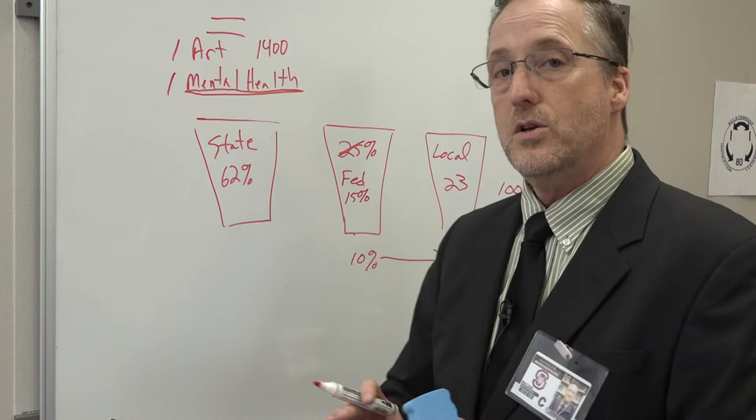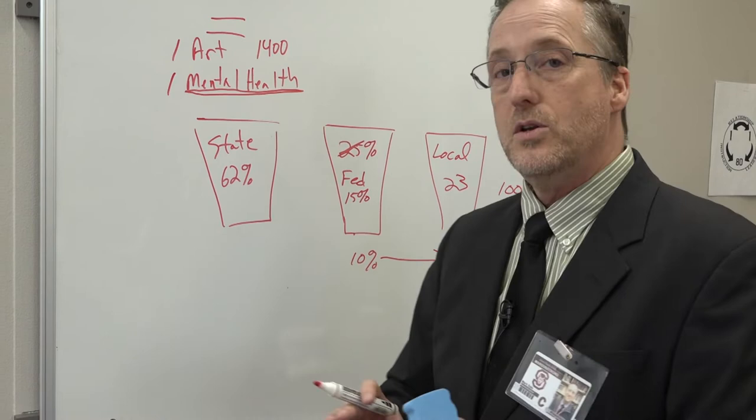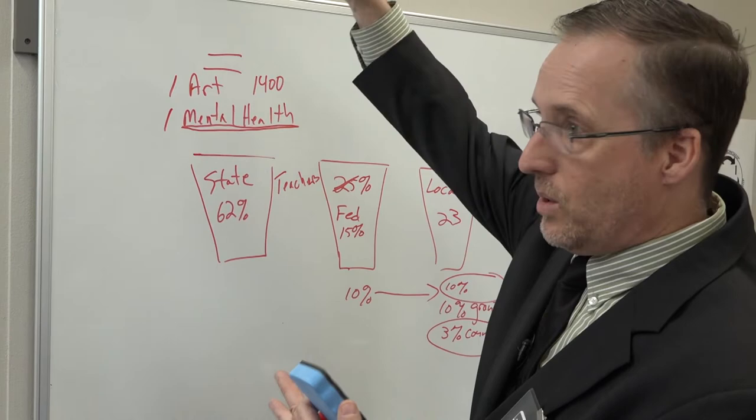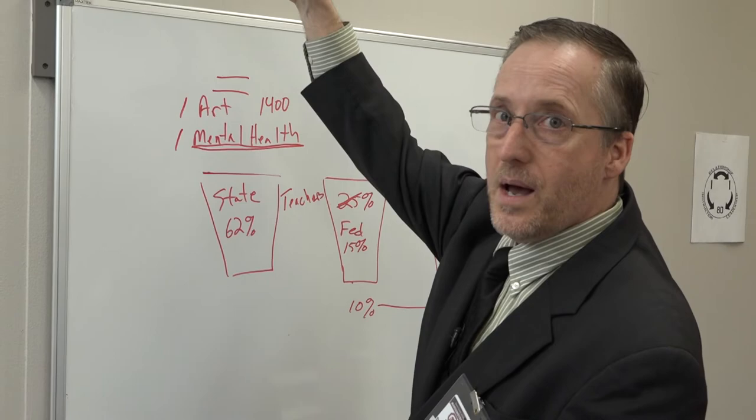Now, what that means is there has been no adjustment to most of our teachers, not all, but most of our teachers' salary because some were given a step on their pay scale. We have a pay scale for teachers working one year, two year, three year, all the way up through about 30. Some received a step on that, but there are some that did not.